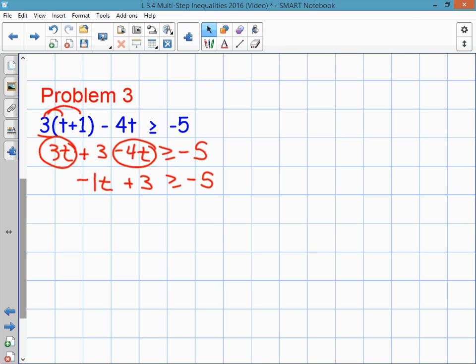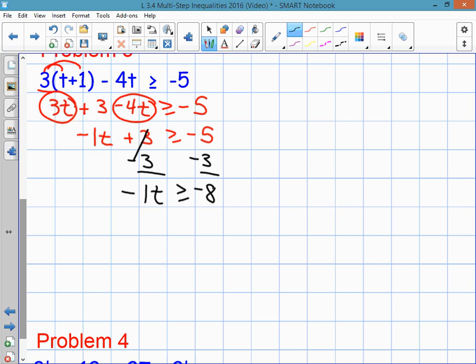Solve it just like an equation. The plus 3, to get rid of it, you subtract 3. I'm left with negative 1t greater than or equal to negative 5 and negative 3 is negative 8. And the last step is to get rid of this negative 1. So I divide both sides by negative 1. Negative 8 divided by negative 1 is positive 8. These ones cancel. I get t. Because I have divided by a negative number, I have to flip the inequality.